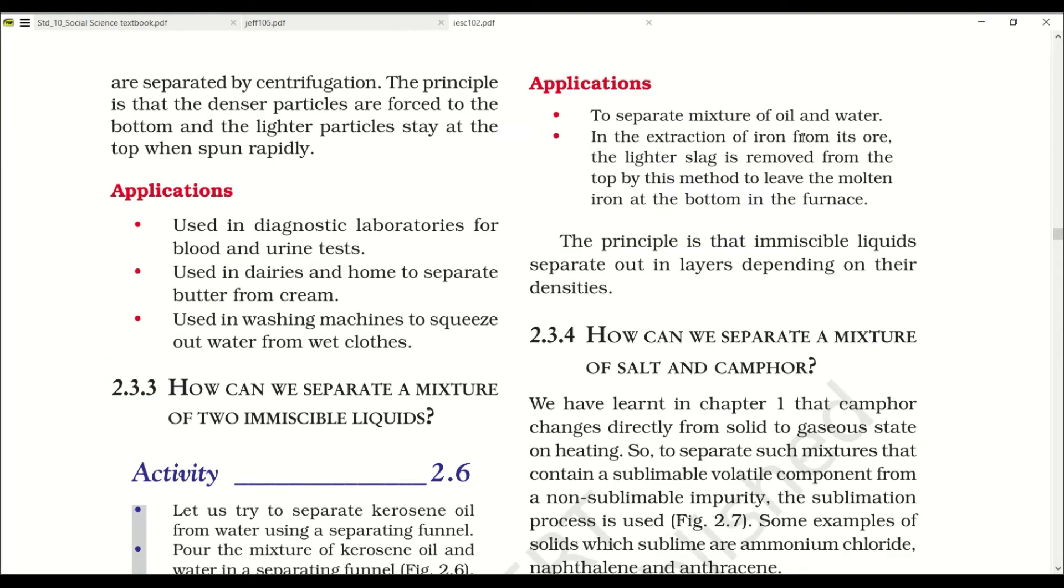Application: to separate mixture of oil and water, in the extraction of iron from its ore. The lighter slag is removed from the top by this method to leave the molten iron at the bottom of the furnace. The iron is separated by heating, and the heavier iron remains at the bottom while the impurities float on top. This principle is that immiscible liquids separate out in layers depending on their densities.